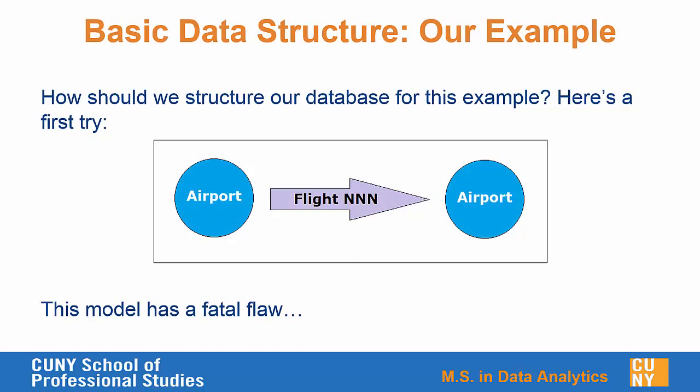Here's a first try. You might think it makes sense to have each airport be a node and then use the flight information as the connecting relationship between the airports. However, that's going to have one fatal flaw: you'll often have multiple flights between airports, and we typically don't want several of the same kind of relationship between two different nodes. We want to keep just one of each kind of relationship between nodes, so if we have multiple flights from one airport to another, that won't work in Neo4j very well.